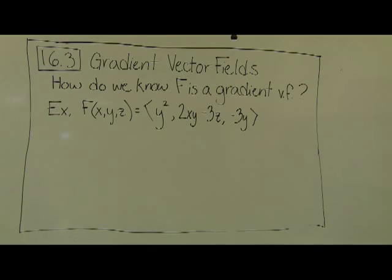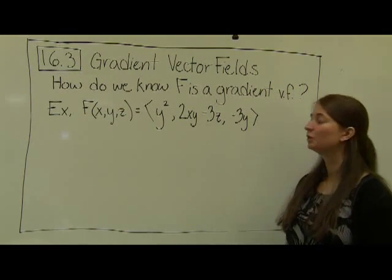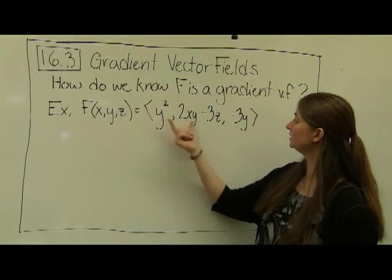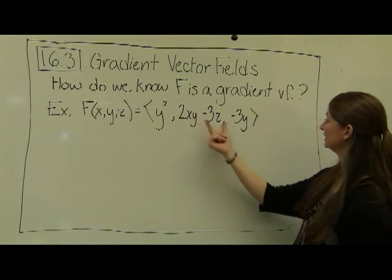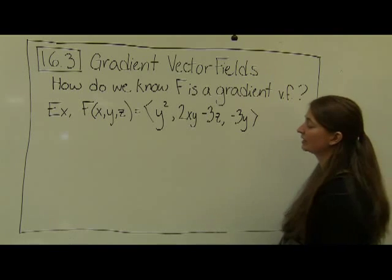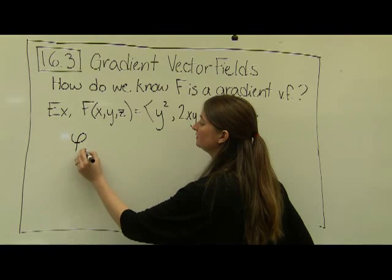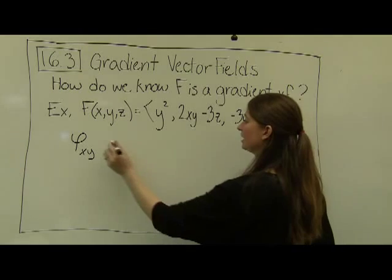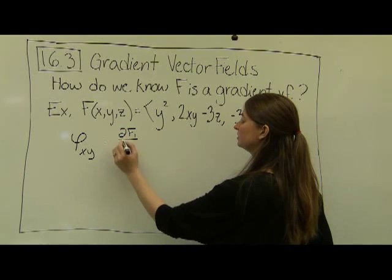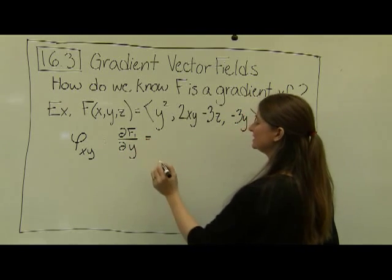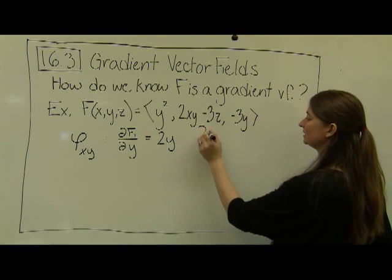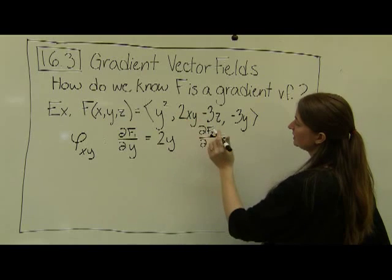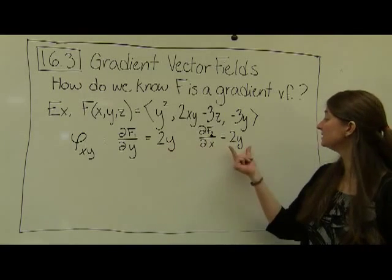Let's see an example. Let f be given by: first component y², second component 2xy − 3z, third component −3y. I'll check phi_xy first: the partial of f1 with respect to y is 2y, and the partial of f2 with respect to x is also 2y. Those match.